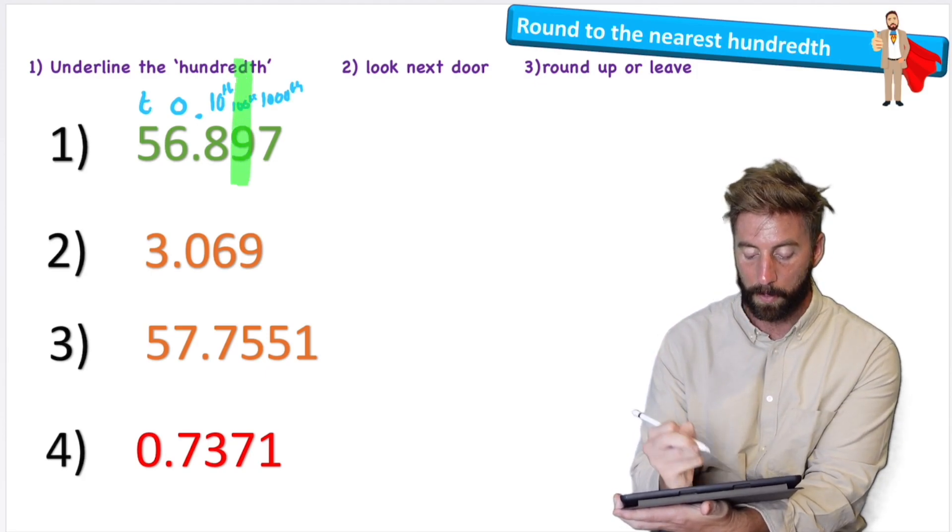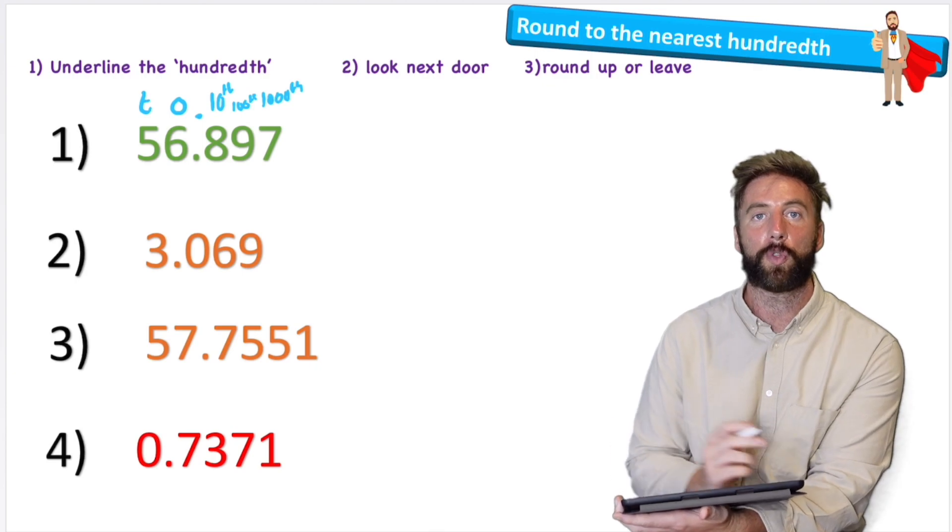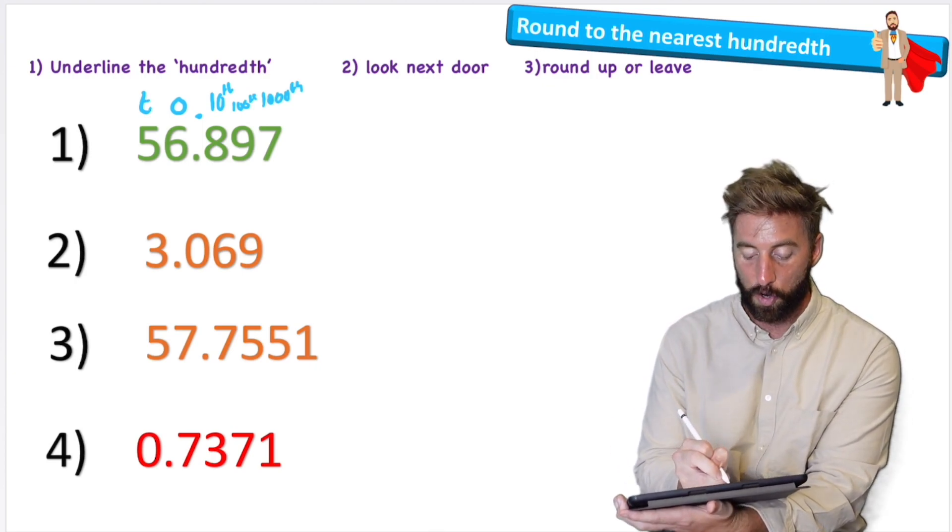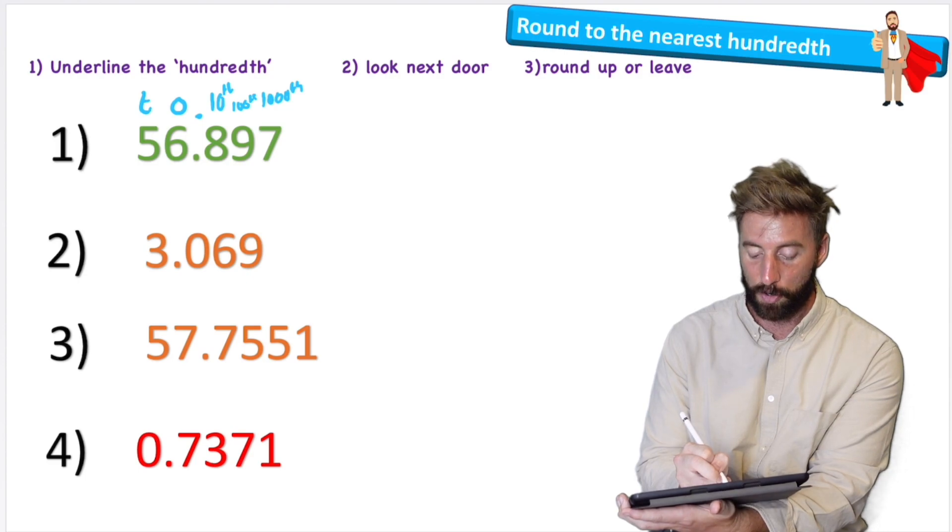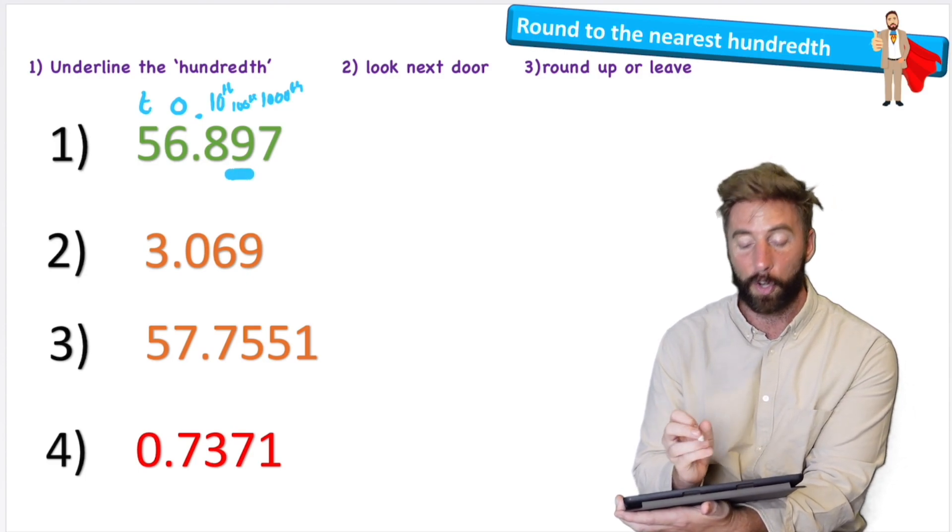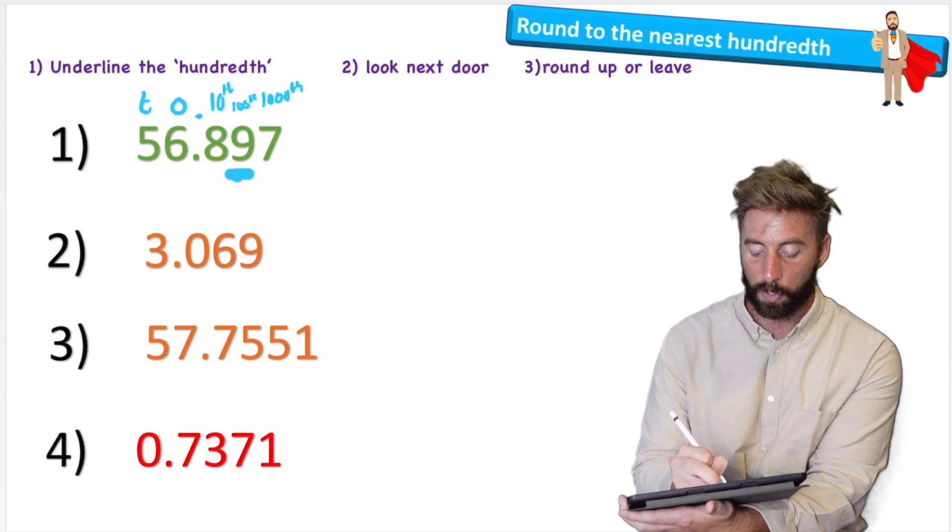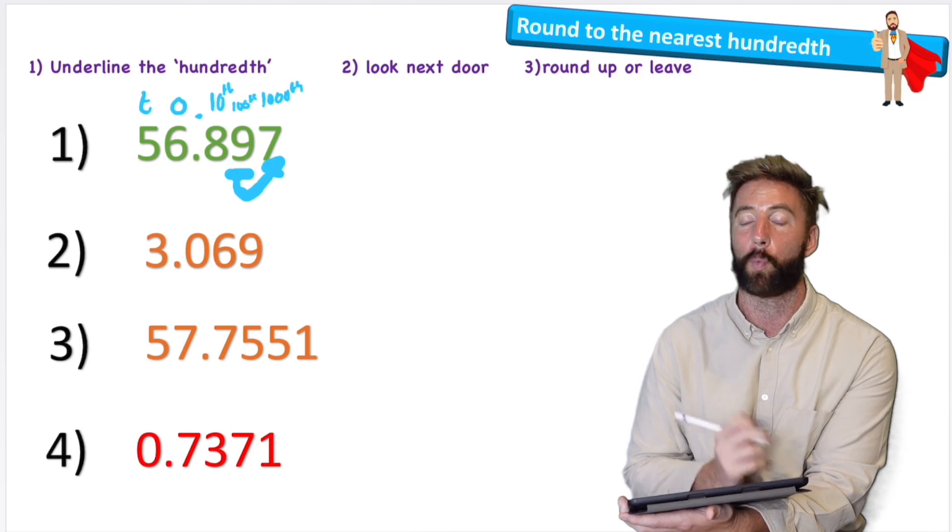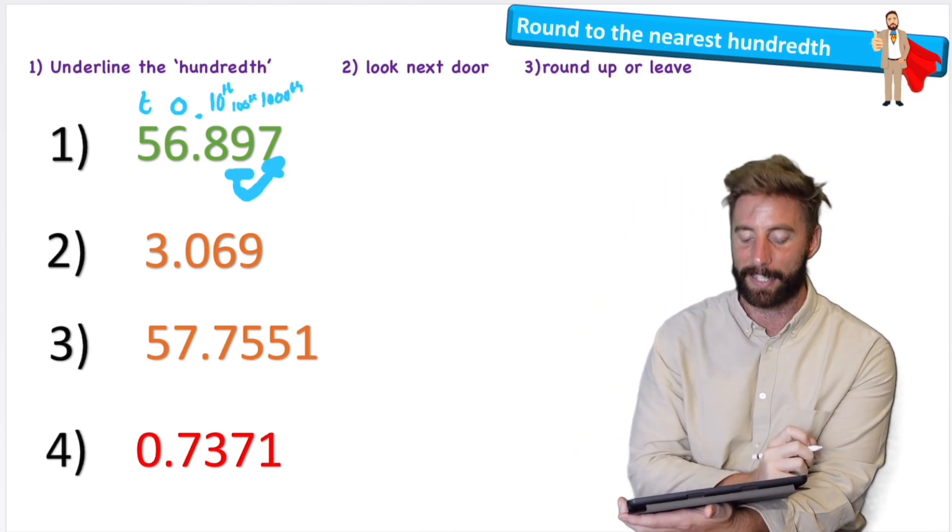So to do that, we're just going to follow these simple steps. First, we're going to underline the value that's in the hundredths column, in this case a nine. Then we're going to look at step two, which says look next door. And I'm going to look next door to the right to see what number is going to influence me, whether I round it up or keep it as it is.